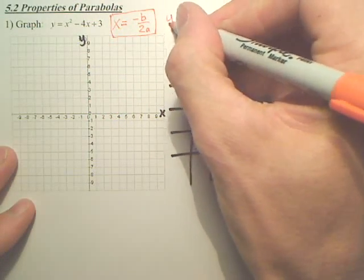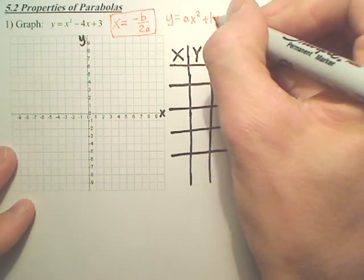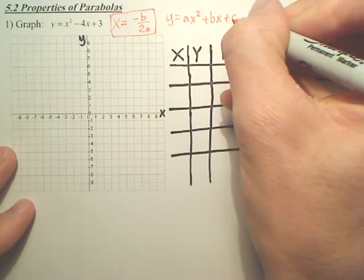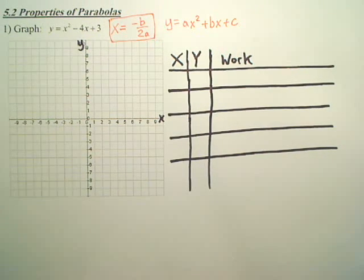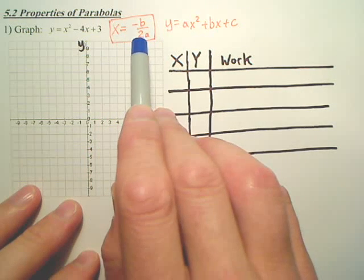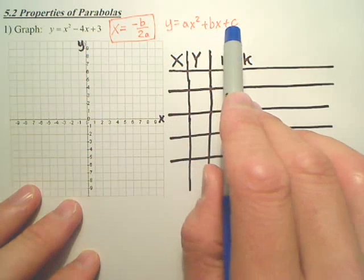But that formula might not make any sense if you don't first know this. You first have to know that. That's standard form. This is a formula for the line of symmetry, or axis of symmetry. This is standard form.